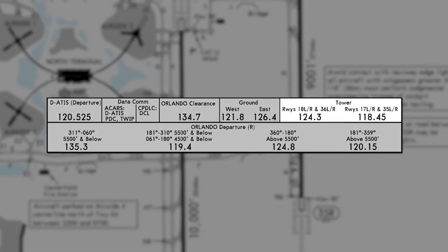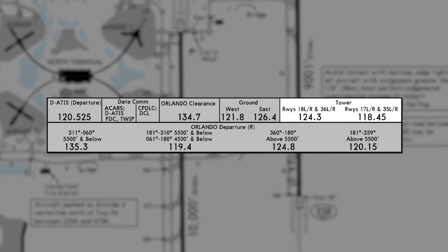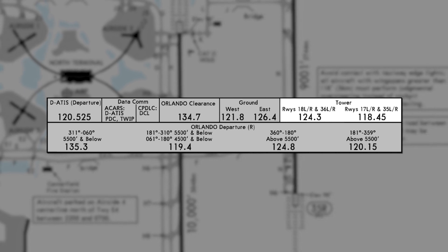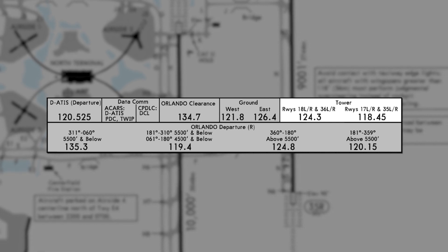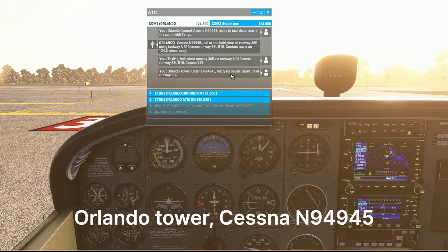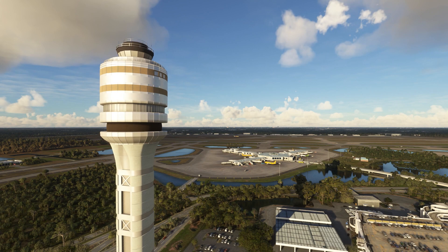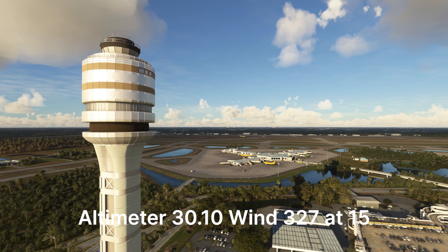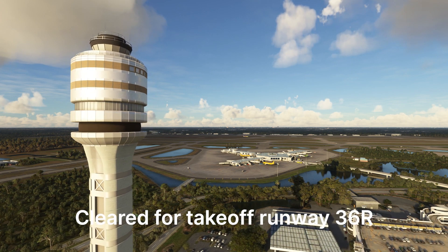We'll write down the taxi instructions and taxi to the runway. This video focuses on the communication section. Tower is split into multiple frequencies depending on which runway we're using. We're flying 36 Right so we'll call 124.3. [Pilot]: Orlando Tower, Cessna November Niner 4945, ready for south departure at runway 36 Right. [ATC]: Cessna November Niner 4945, altimeter 30.10, wind 327 at 15, departure to the south approved, cleared for takeoff runway 36 Right.